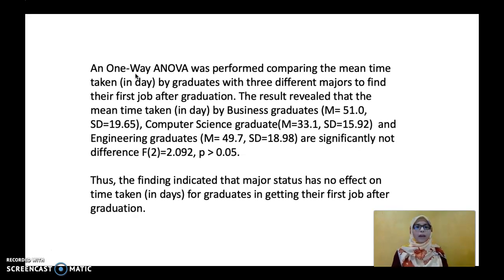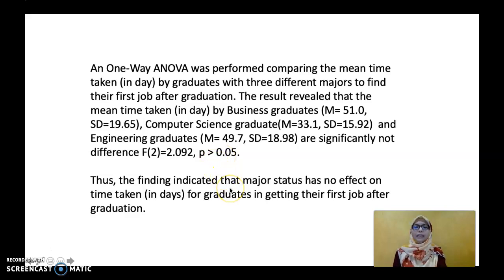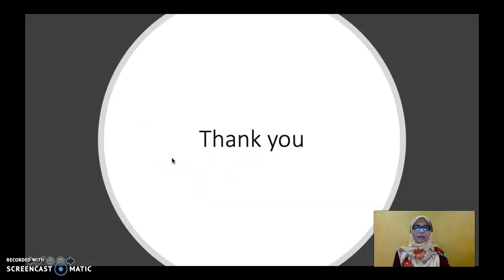A one-way ANOVA was performed comparing the mean time taken in days by graduates with three different majors to find their first job after graduation. The results revealed that the mean time for Business graduates was 51 days, Computer Science was 31.1 days, and Engineering was 49.7 days, with no significant difference found. The p-value is more than 0.05, thus the finding indicates that major status has no effect on the time taken for graduates to get their first job after graduation. This is how you report one-way ANOVA: begin with the descriptive statistics, followed by the one-way ANOVA result itself.